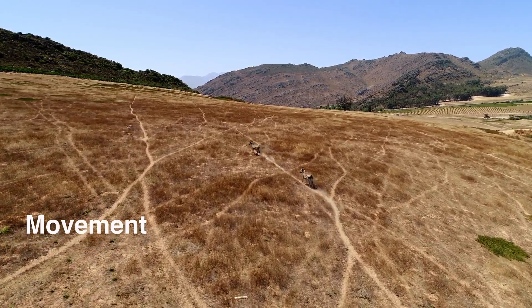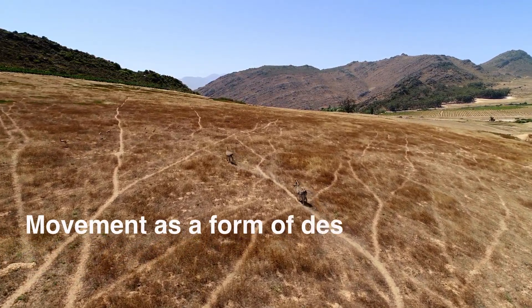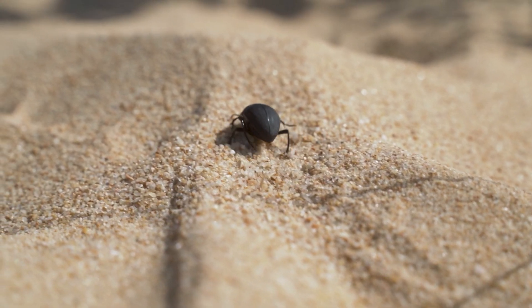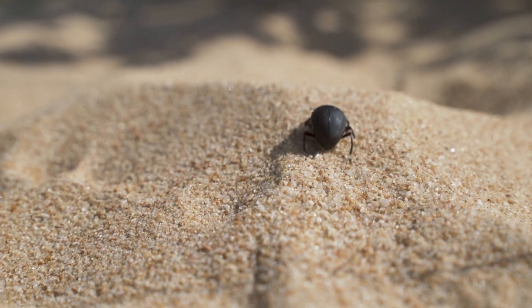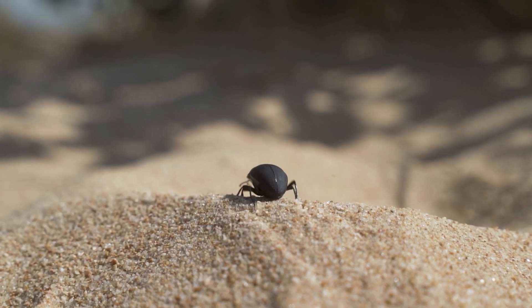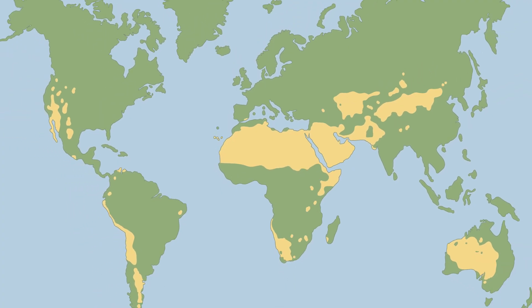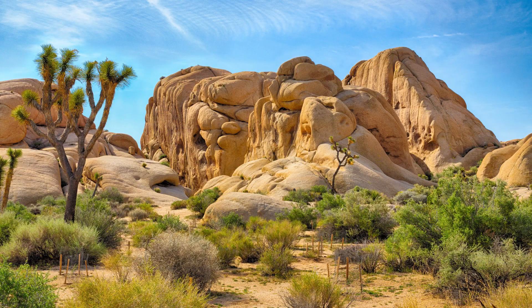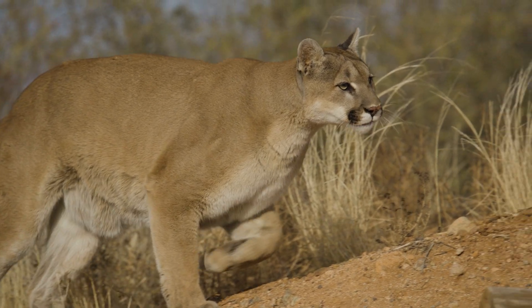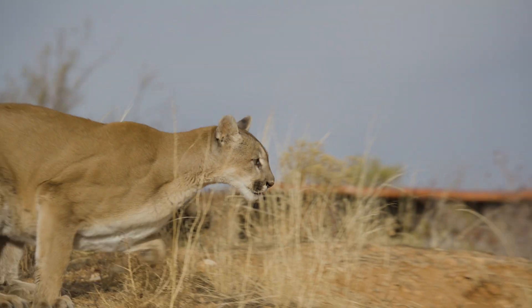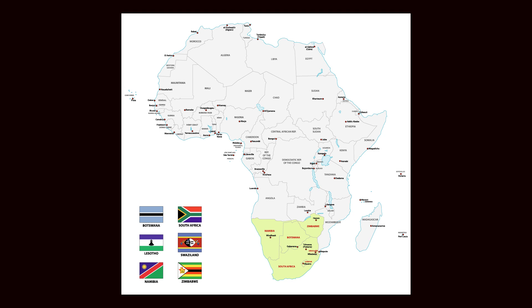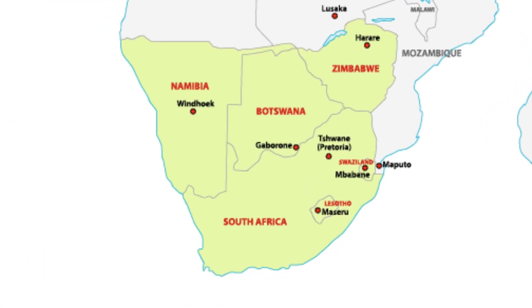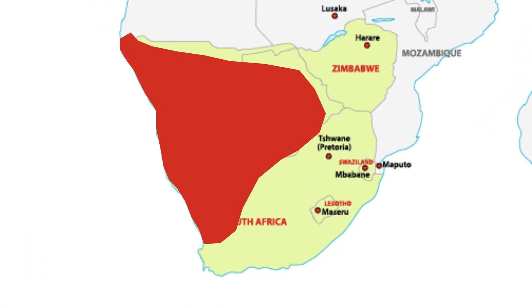Movement by desert organisms can be seen as one broad category of desert adaptation. In this video we're going to look at how different organisms in deserts use movement in different ways to survive. There are many arid regions around the world, but my examples will come specifically from the desert areas in southern Africa — the southwest arid zone — and most specifically from the Namib Desert in Namibia.